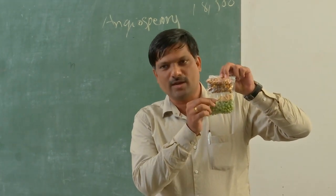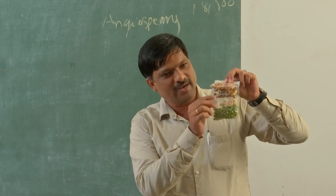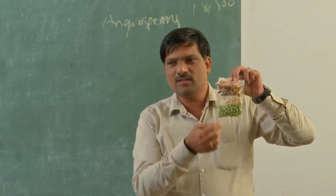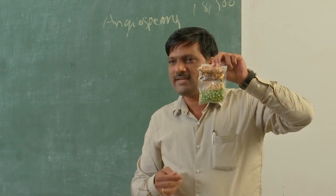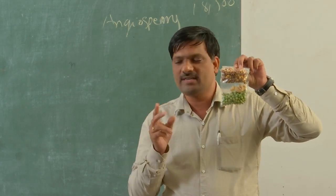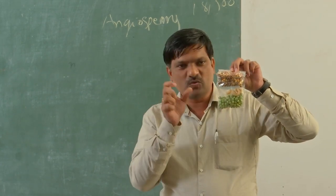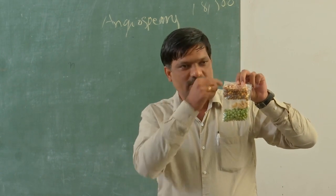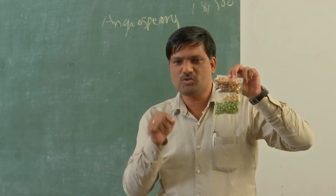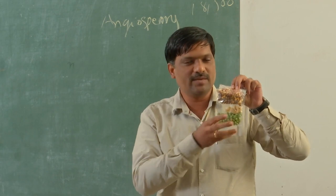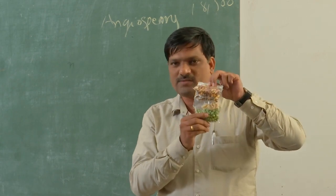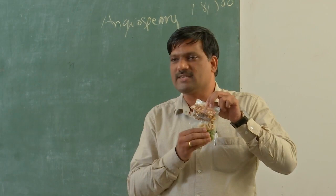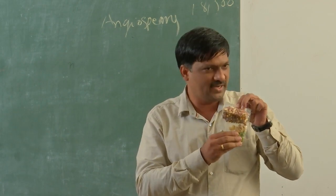Look at these seeds — these are seeds of batani, cashew nut, chana, and groundnut. In all these seeds we can see one important character: we can get two equal halves when the seed is split along the suture. This means there are two cotyledons in the embryo of each seed.